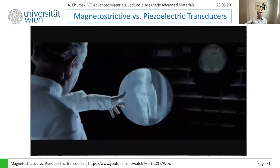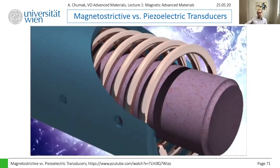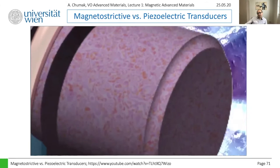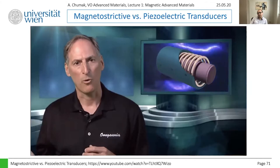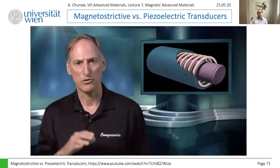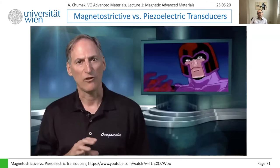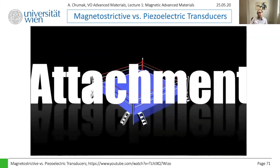Magnetostrictive transducers work on the principle that iron-rich metals expand and contract when placed in a magnetic field. Many thin plates of this material are stacked side by side to make a core. Copper wire is wrapped cylindrically around the core, and the assembly is placed in a canister with the top and bottom touching the ends of the core. As soon as current is applied to the copper coil, producing a magnetic field, the core grows in length. When the current is turned off, it returns to its original shape, causing the canister to resonate.